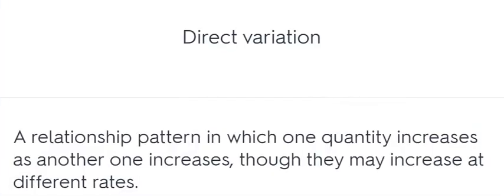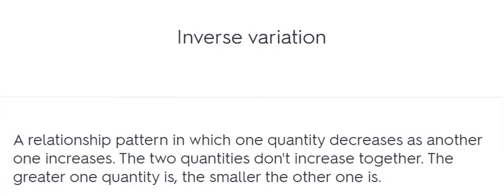Direct variation. A relationship pattern in which one quantity increases as another one increases, though they may increase at different rates. Inverse variation. A relationship pattern in which one quantity decreases as another one increases. The two quantities don't increase together. The greater one quantity is, the smaller the other one is.